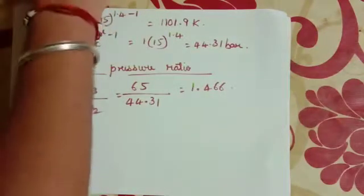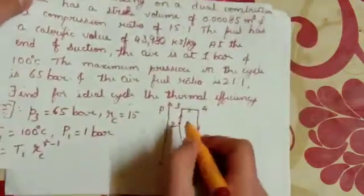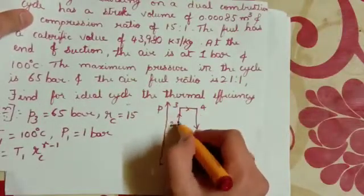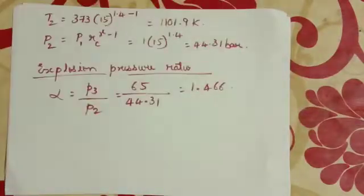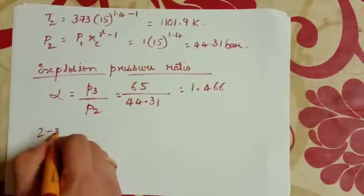Then process 2 to 3 is a constant volume process.